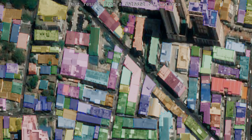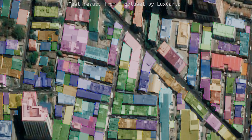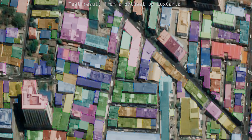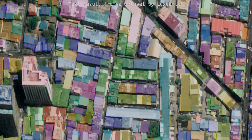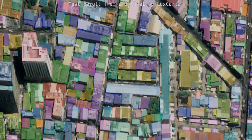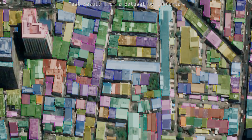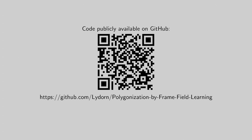We show here our results on a satellite image using the skeleton graph initialization in order to polygonize common walls between adjacent buildings. Thank you for listening. Our code is publicly available on GitHub, where you will also find a link to our extended paper.